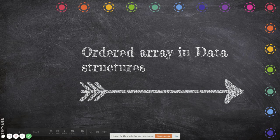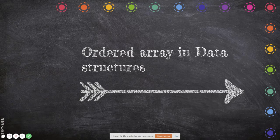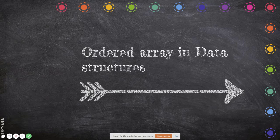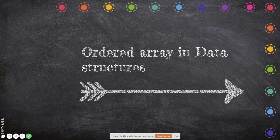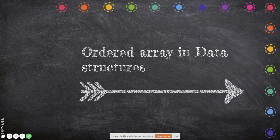In this video we are going to see the implementation of ordered array in data structures using C++. Before that we will see some concepts of ordered array. In the last class we saw unordered arrays. The difference is that in an unordered array the data is not in sorted order, whereas in an ordered array it will be sorted — for example from smallest to largest or largest to smallest.